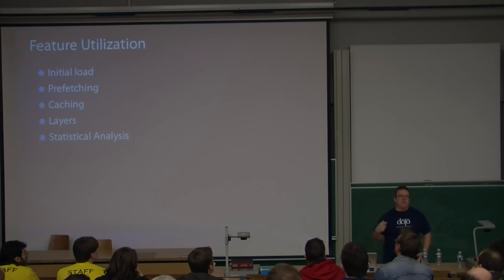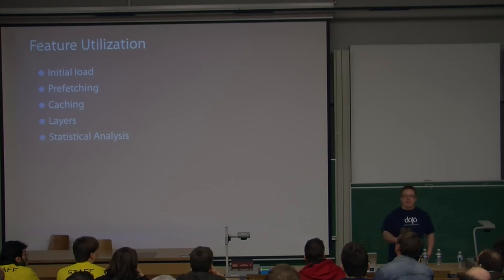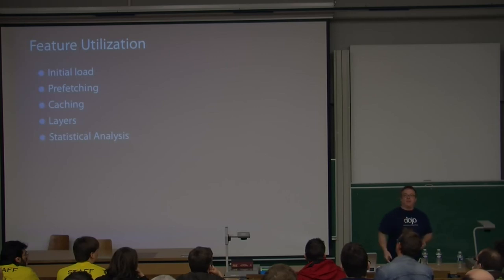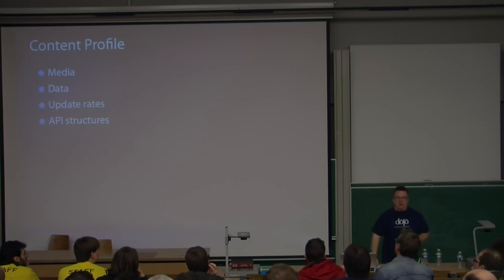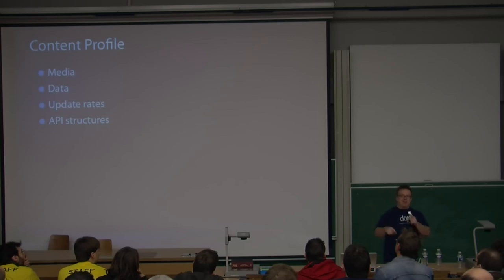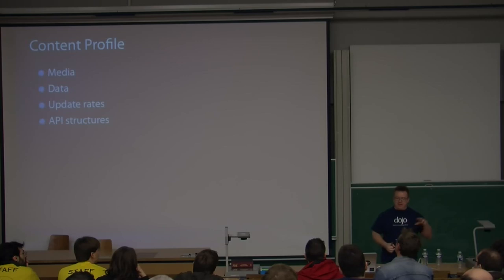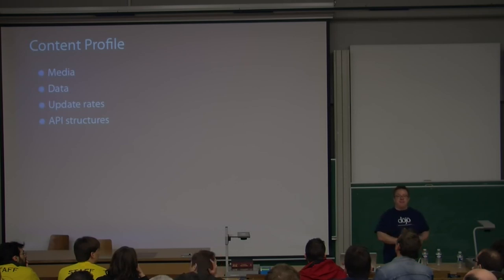Larger sites are starting to use statistical analysis — basically each week or even each day they update their optimization strategy based on how people are actually using the site. If you look at a large site like Facebook, it's constantly changing and constantly getting faster. One of the ways they're doing that is looking at usage patterns for users and pulling in what's needed. Think about how to structure requests logically: delay your media, get your initial DOM in place, then go grab media, think about how frequently things need to update, and structure them in logical ways.